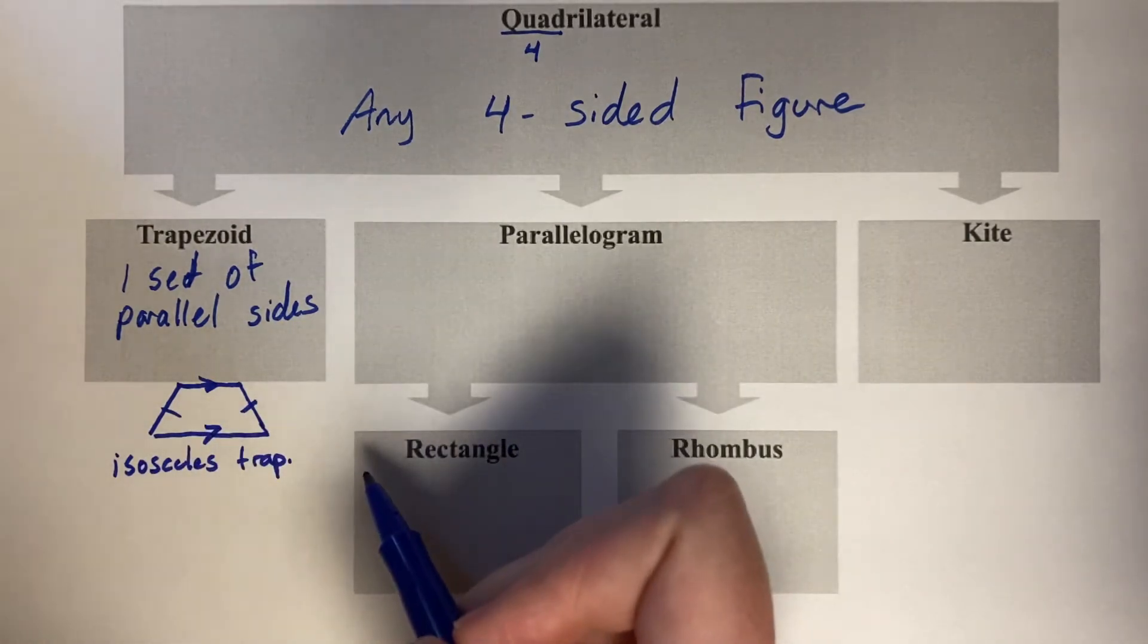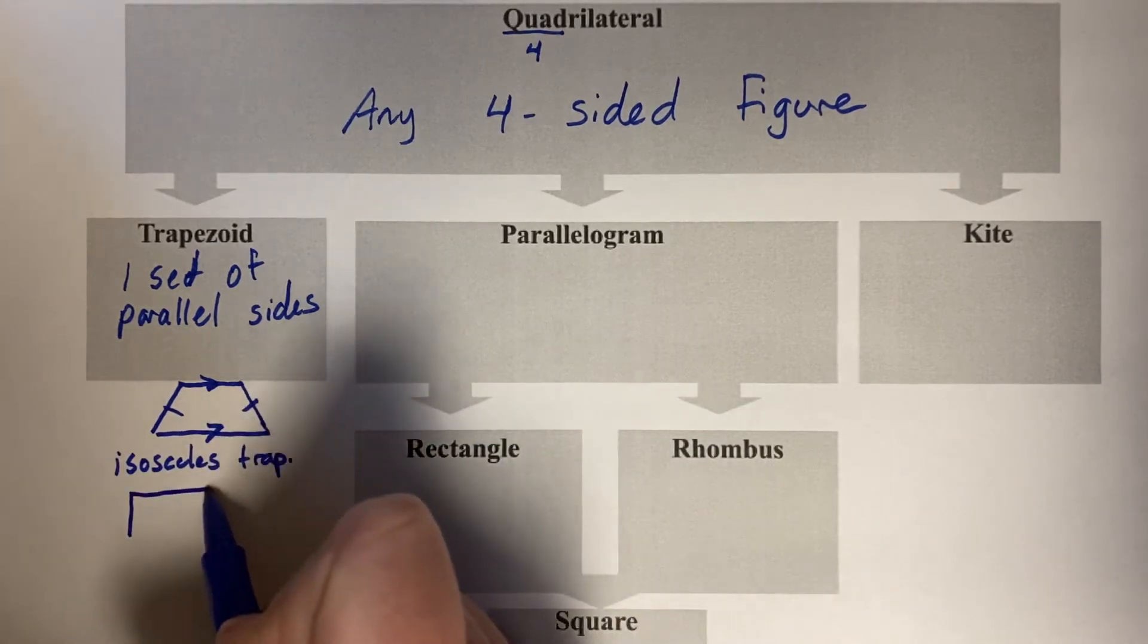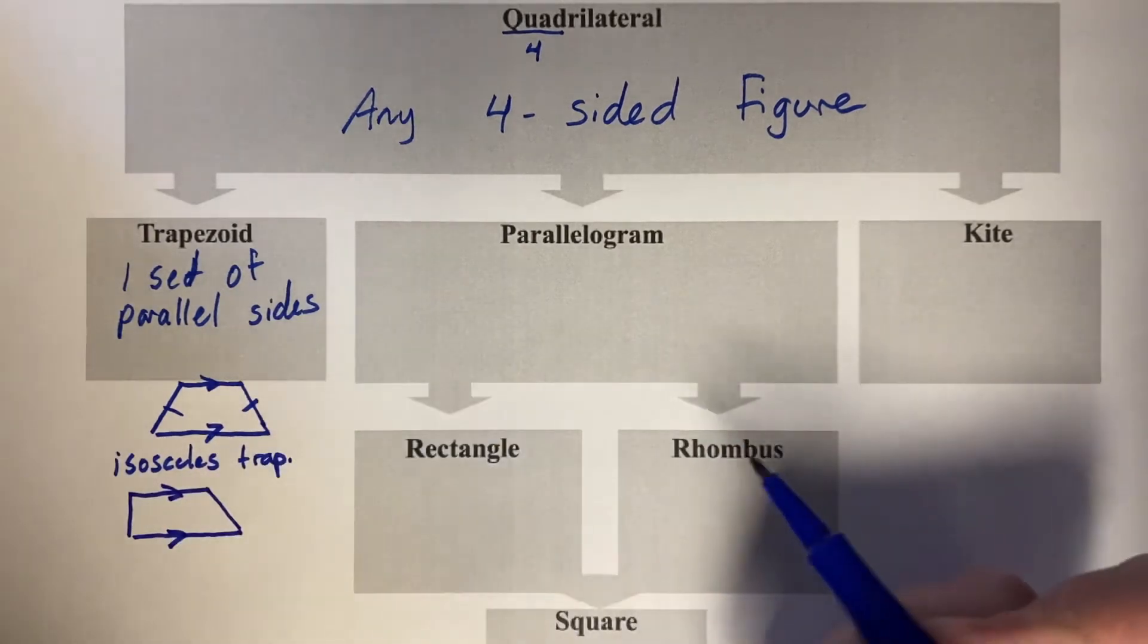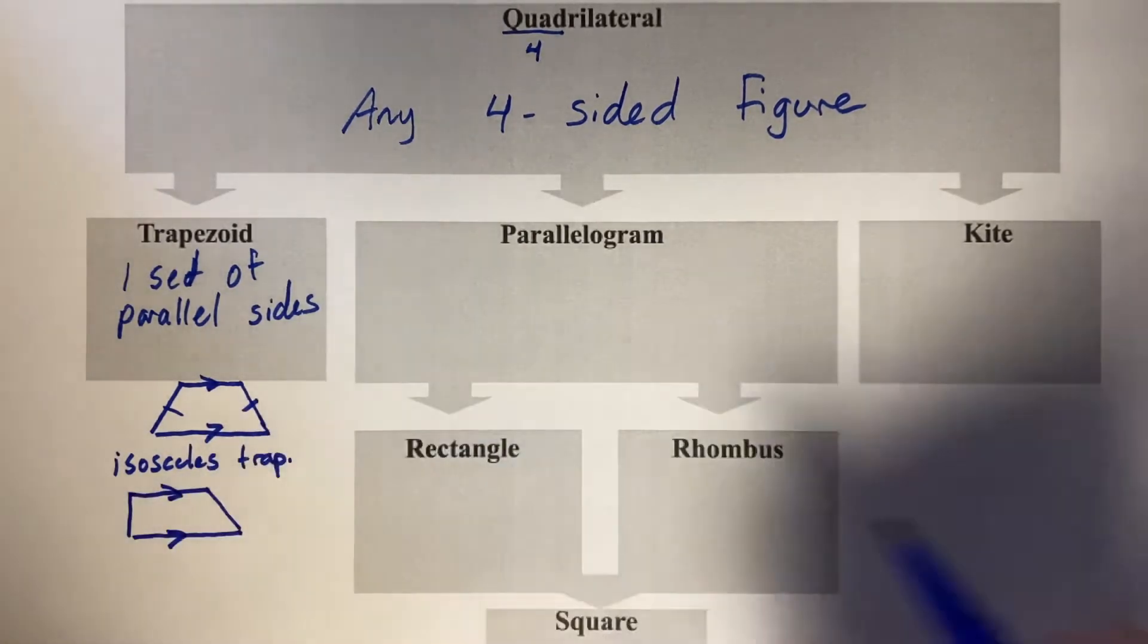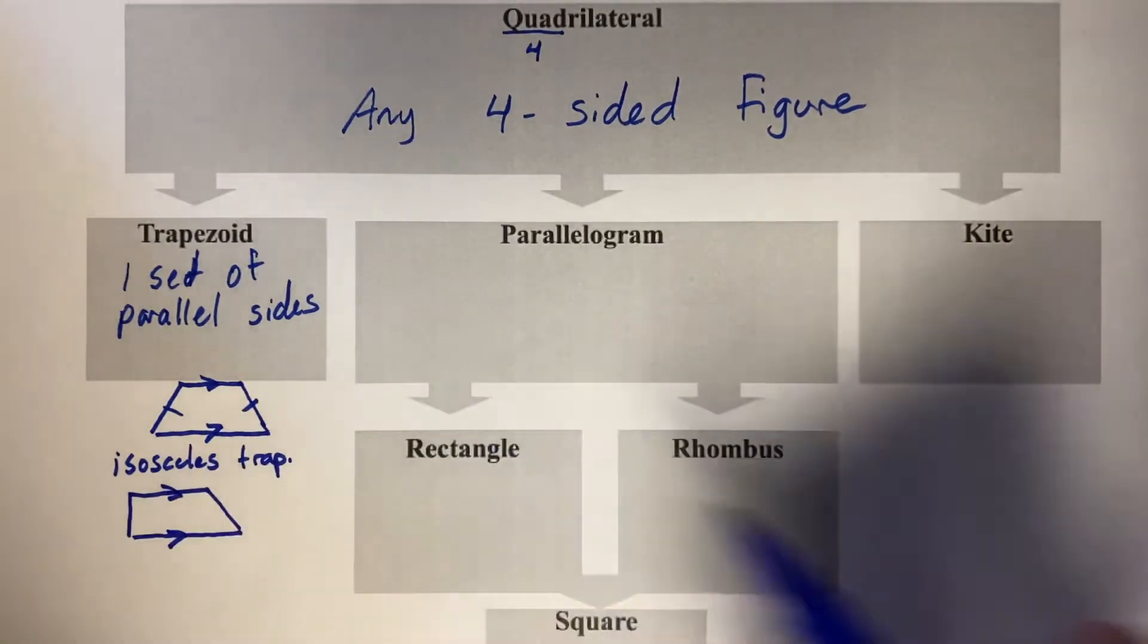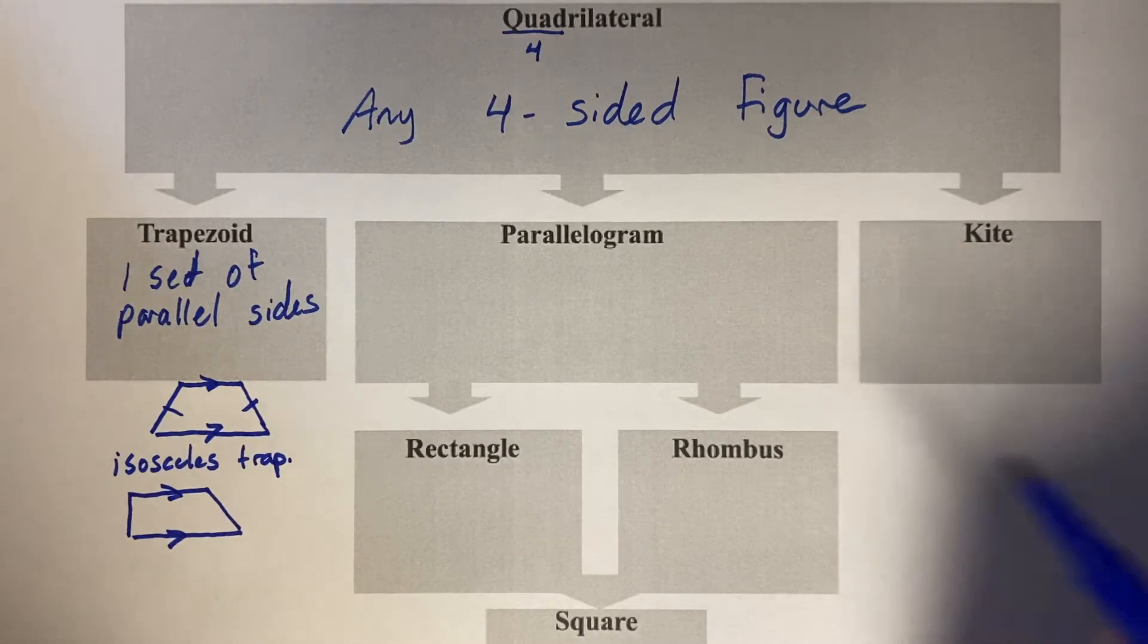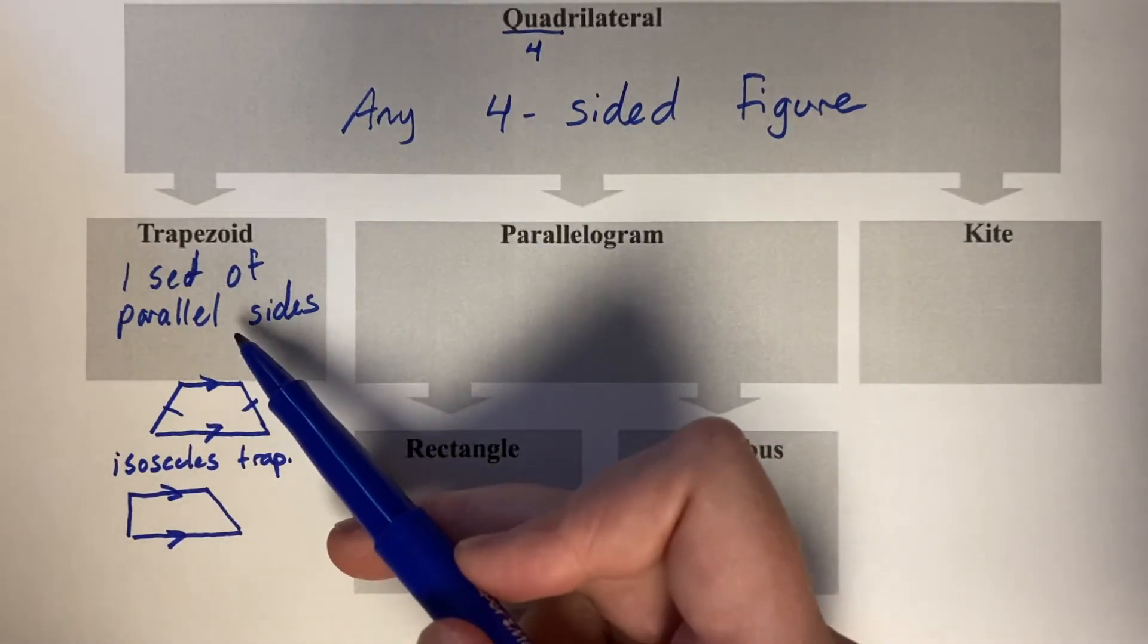There is such a thing as a general trapezoid. It looks kind of like this, where one side, you could even make it a right angle right there, but it wouldn't be like the isosceles trapezoid where those two opposite sides are not parallel to each other. So trapezoid was one set of parallel sides.